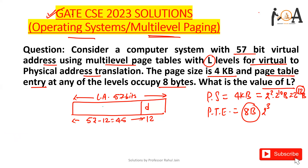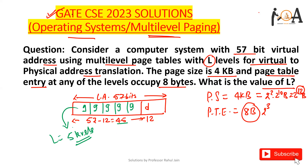We need to divide the remaining 45 bits into parts to manage the multi-level page table. We can divide 45 bits into 5 parts, with each part containing 9 bits. So we can represent 45 bits using 5 levels. Therefore, the value of L equals 5.